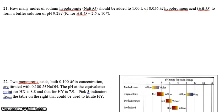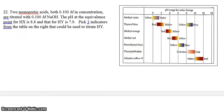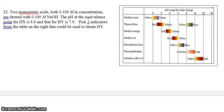Now, 22 is just a quick little non-calculation explanatory question. So, here it says, we have two monoprotic acids and they're titrated. The pH of the equivalence point for one acid is 8.8. For the other acid is 7.9. Pick three indicators from the table on the right that should be used to titrate this. Now, what you want to choose is the indicator that changes closest to your equivalence point pH. Because the equivalence point, if you take a look at titration, it's a pretty broad range.